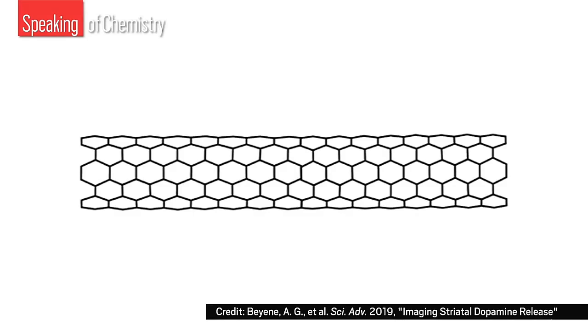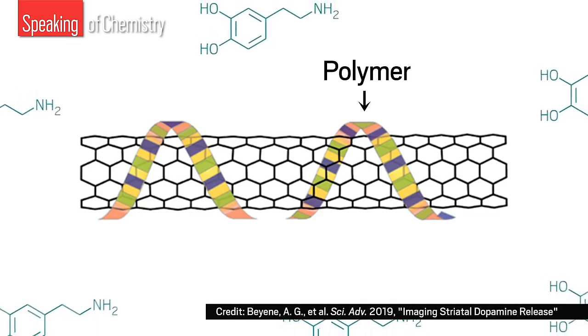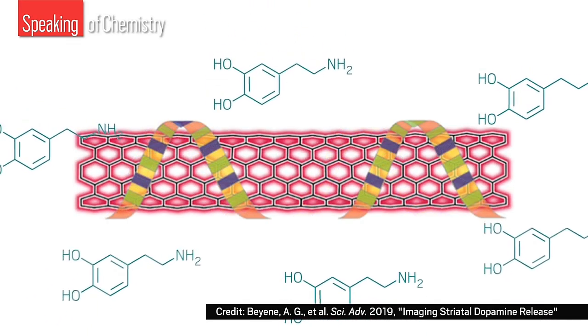To detect dopamine, Markita and her group use nanosensors they built by pairing carbon nanotubes with polymers. When the polymers react with dopamine, they increase the nanotubes' natural fluorescence to signal binding.